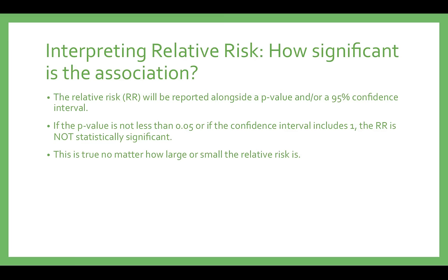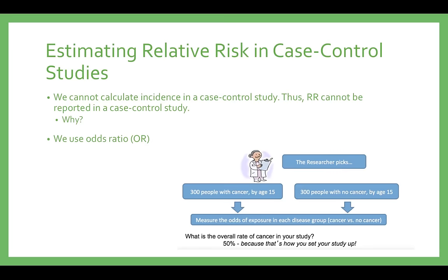This applies to the odds ratio as well. The relative risk will be reported alongside a p-value and or a 95% confidence interval. If the p-value is not less than 0.05, or if the confidence interval includes 1, the relative risk is not statistically significant. This is true no matter how large or small the relative risk is. You may have noticed that you have all the information you need to calculate a relative risk when you do a cohort study. This is not true for case-control studies — you cannot calculate incidence or risk in a case-control study. Thus, you cannot calculate relative risk from a case-control study.